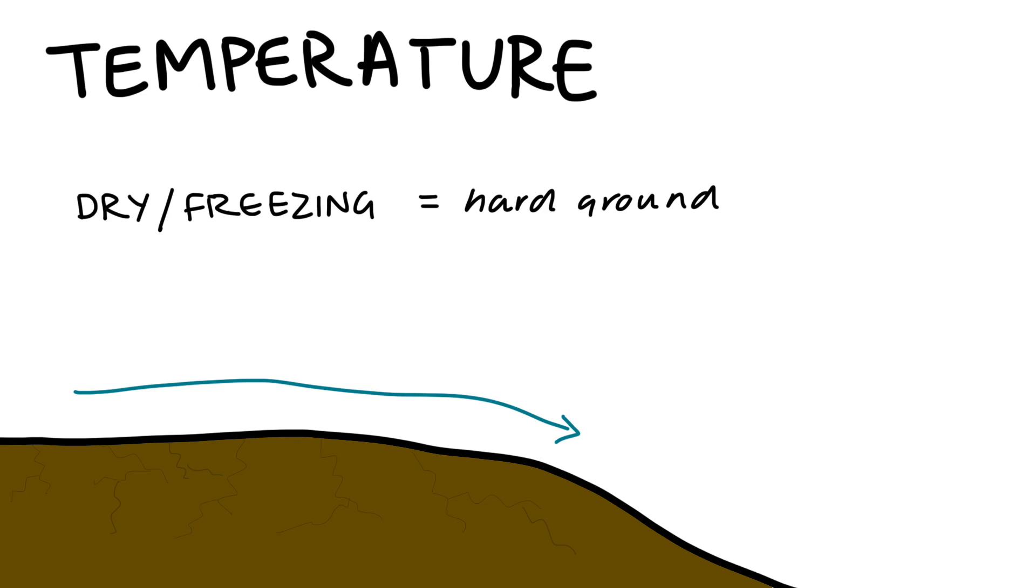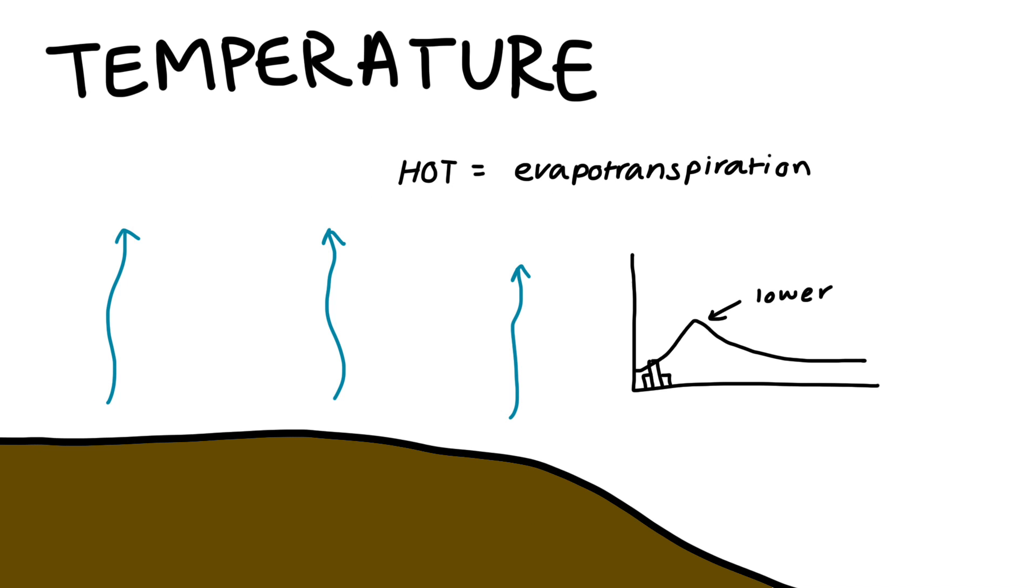Finally, hot dry conditions and cold freezing conditions harden the ground, reducing infiltration and therefore lag time. High temperatures also increase evapotranspiration, reducing the peak discharge as less water will reach the channel.